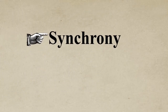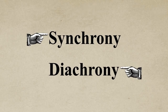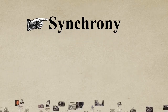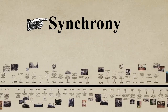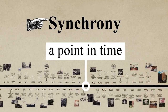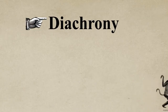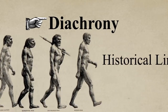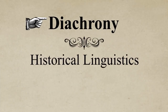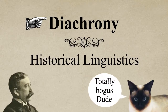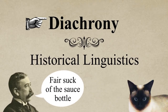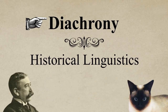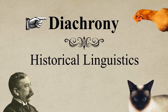Fourthly, Saussure distinguishes between synchrony and diachrony. Synchrony refers to a complete language system at just one point in time — think of it as a snapshot of language. Diachrony, on the other hand, is how that language develops over time, also known as historical linguistics. You may have noticed changes in language over your lifetime, with different words appearing or disappearing, or slight pronunciation changes. That's diachrony.